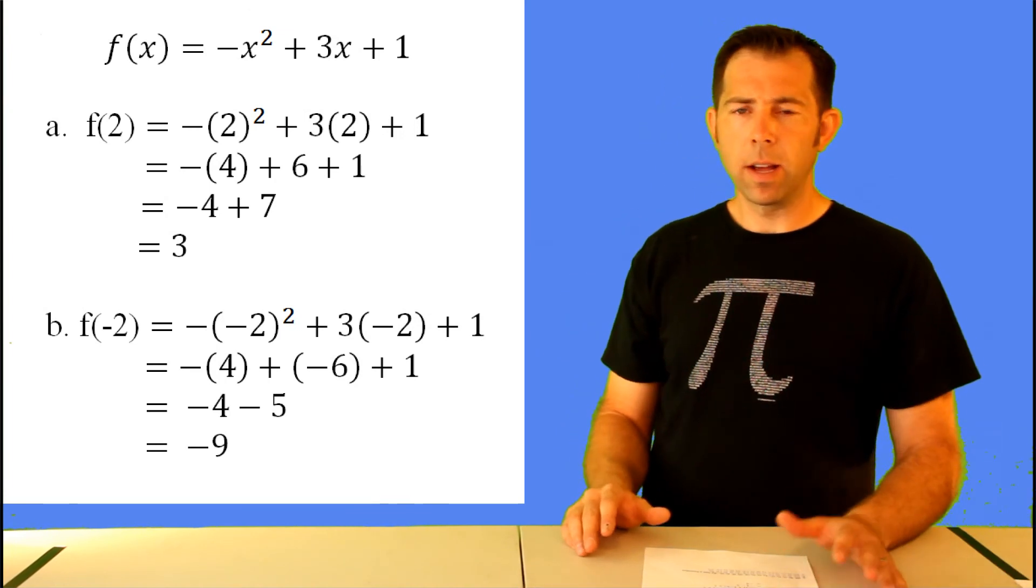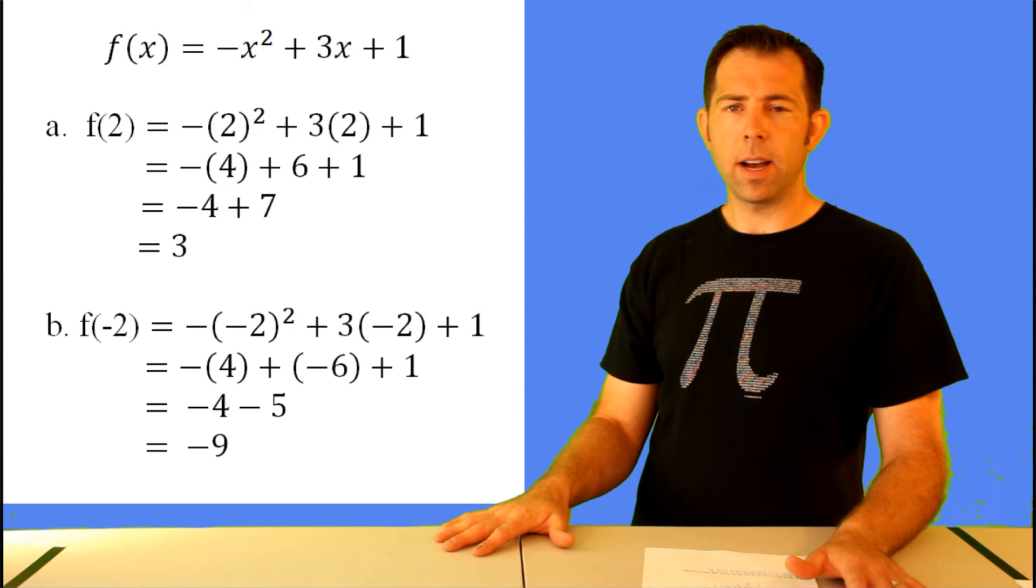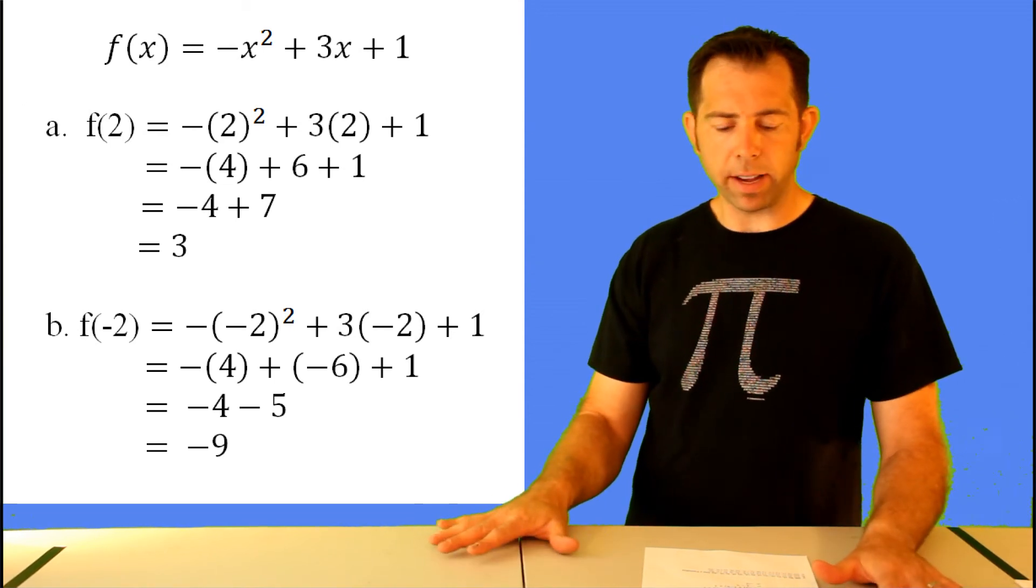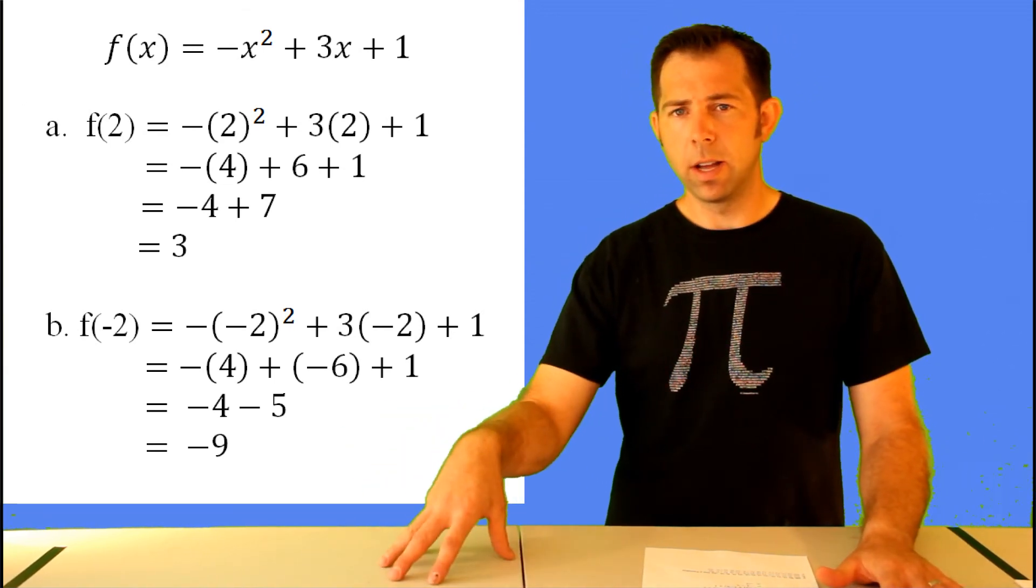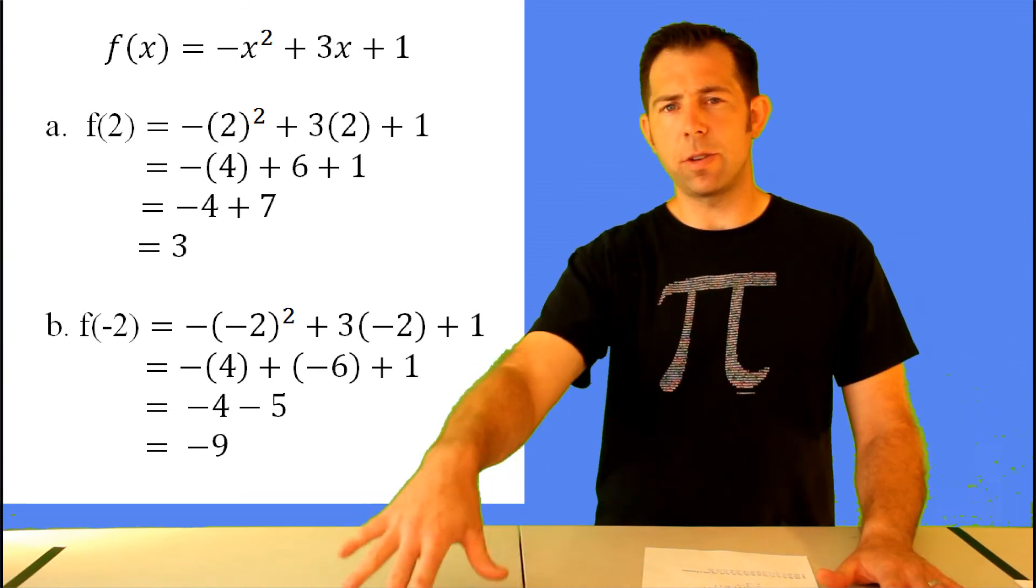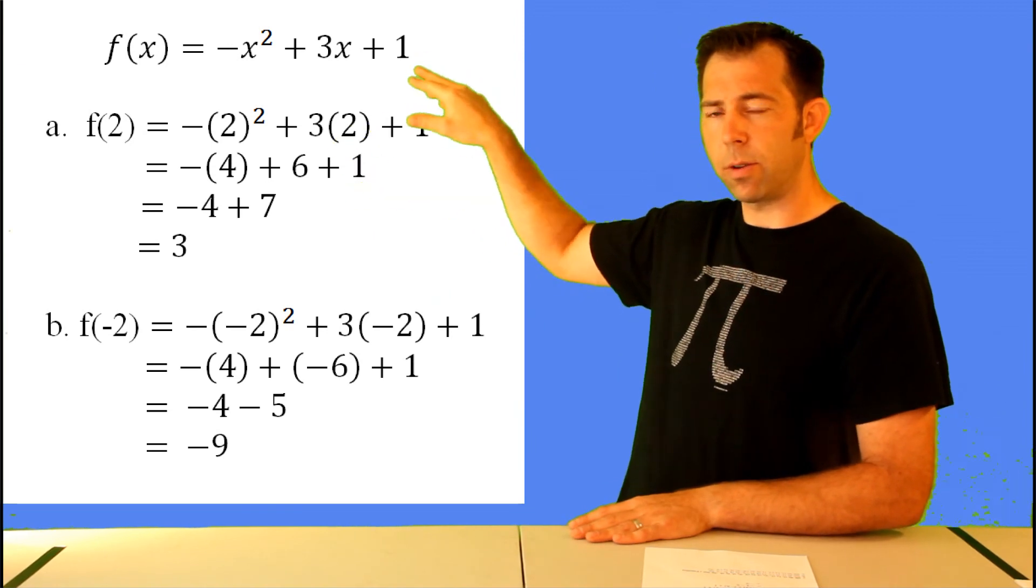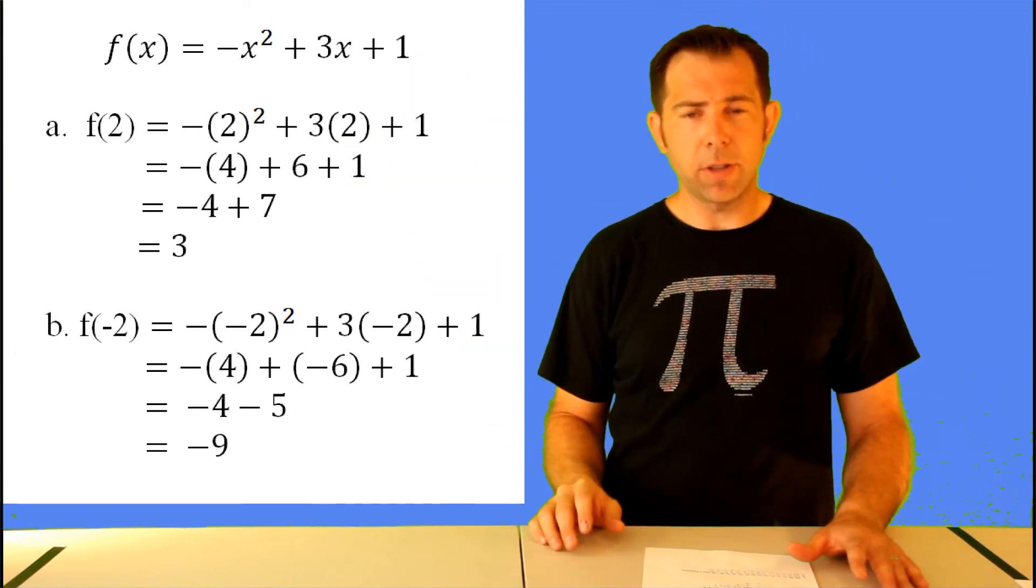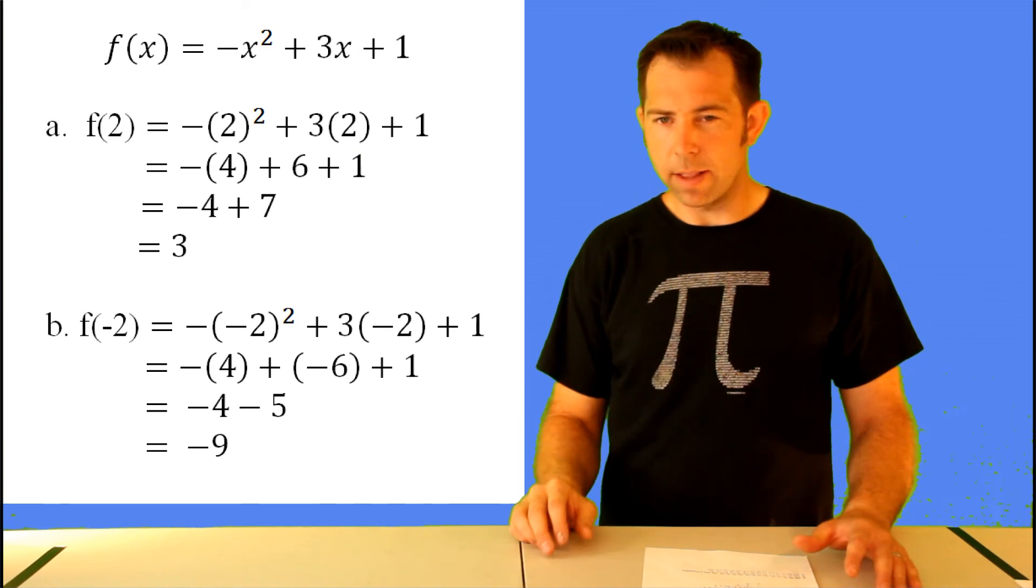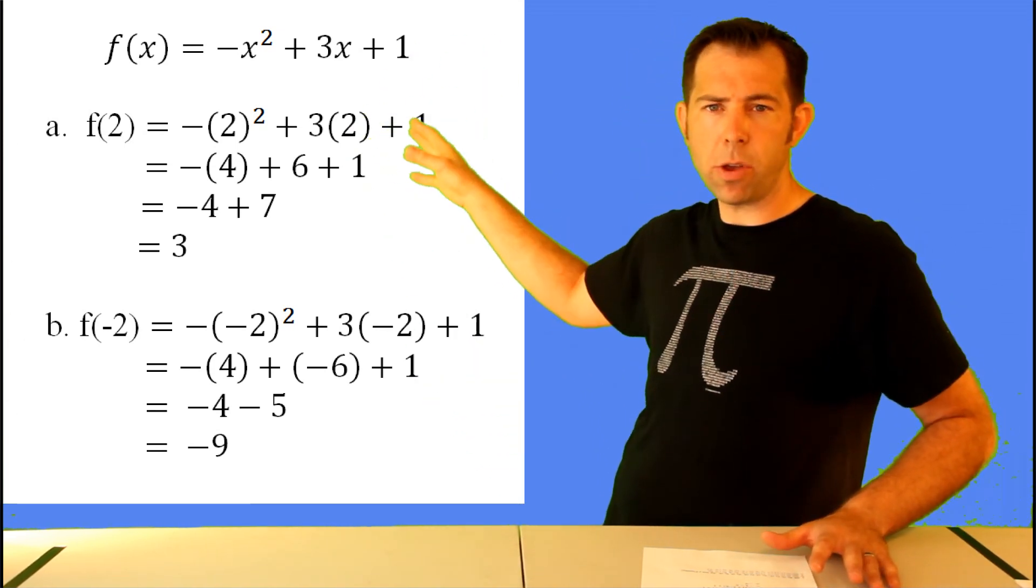So notice the first term. You might think of this as negative x squared or minus x squared, but another way to think about it is the opposite of x squared. So when you input two, you've got to think of this as the opposite of two squared. That means you need to square the two first. So that's why we put it in parentheses, so we have negative two squared, or the opposite of two squared. So that gives you negative four. The common mistake is to make it a negative two squared and get positive four, especially if you use your calculator.